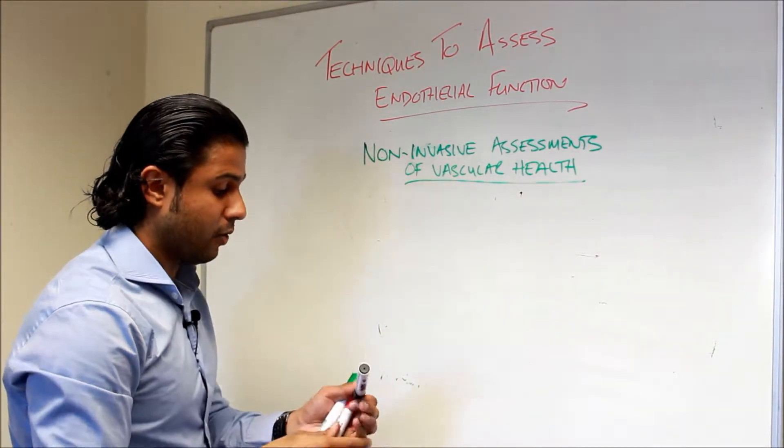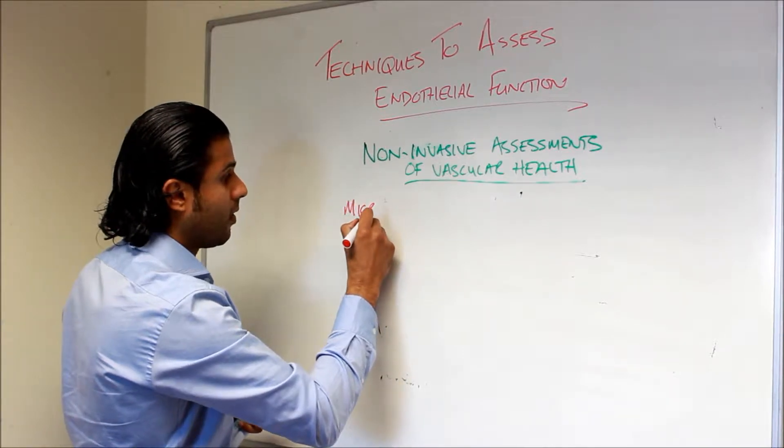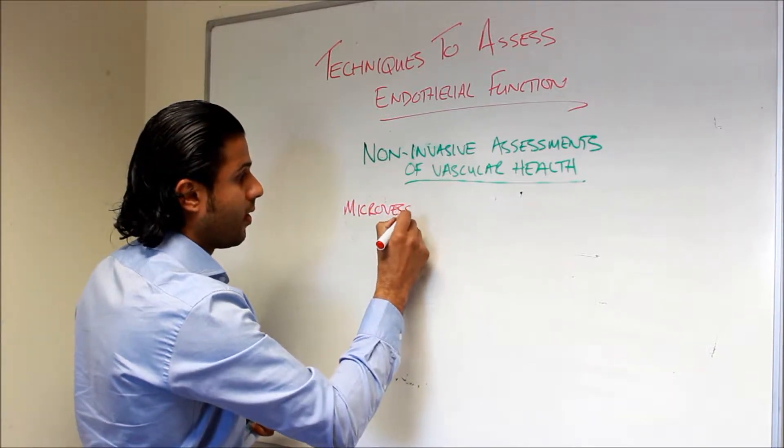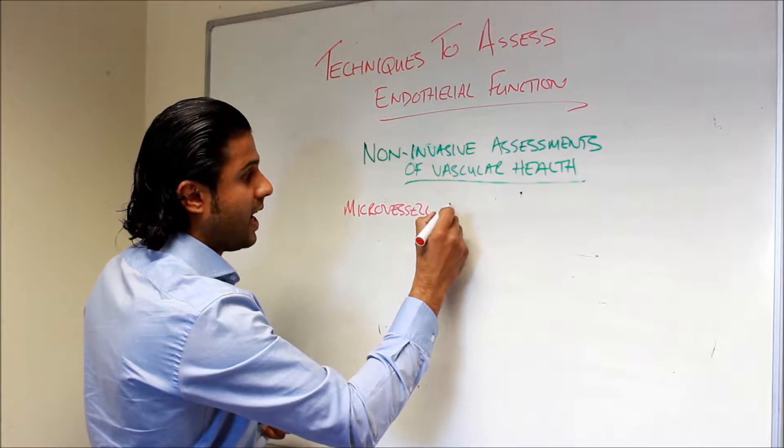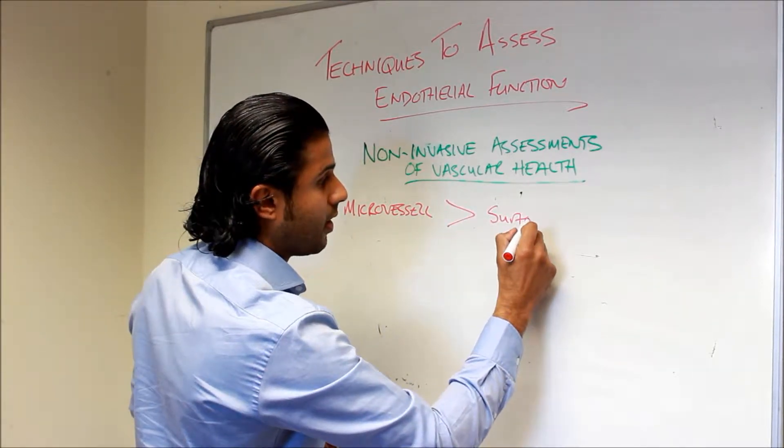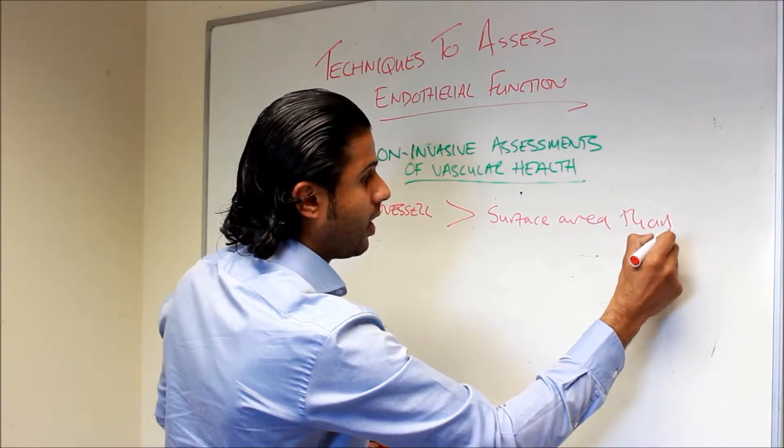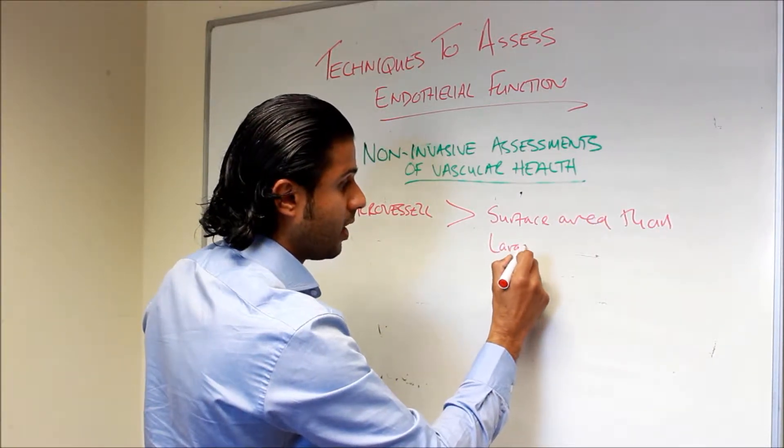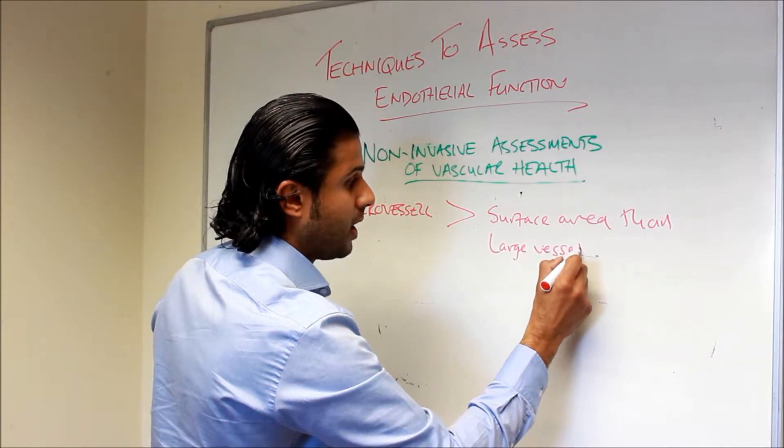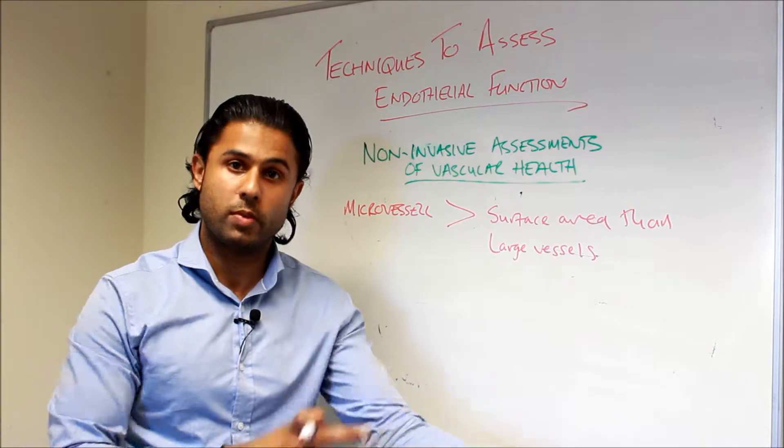Microvessels have a greater surface area than our large vessels. So far I've talked about the carotid artery, the radial artery, the femoral artery, the brachial artery, and so on.